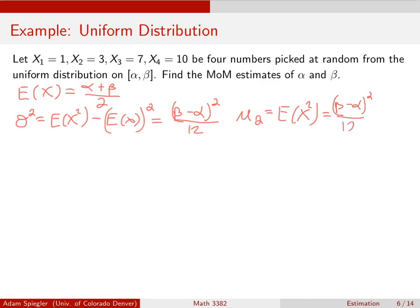And then what we're going to do is if we move the expected value of X squared to the other side, that would give us E(X²). So now we're going to add alpha plus beta over two squared to both sides. And that would give me my second theoretical moment.